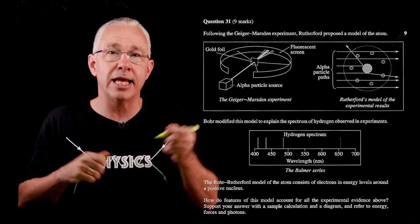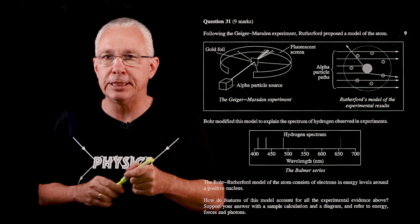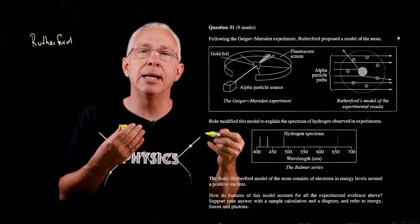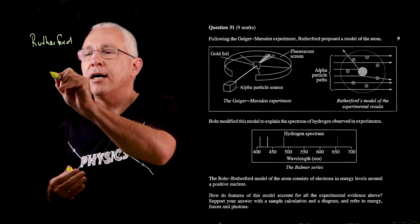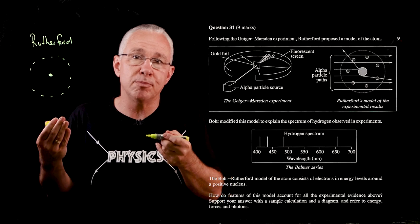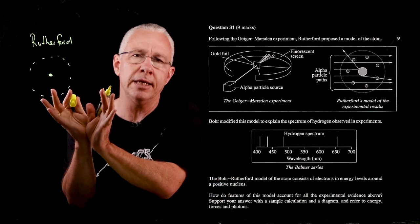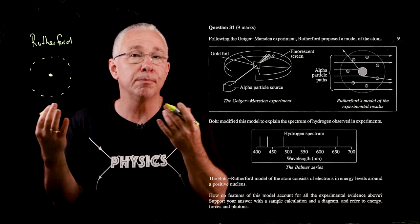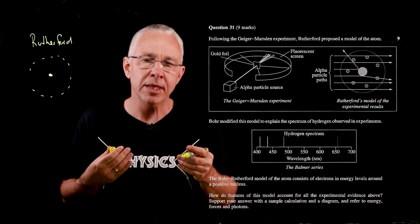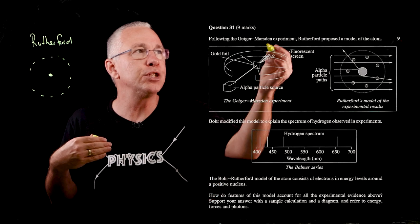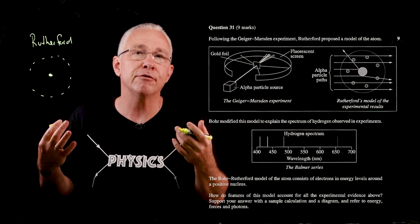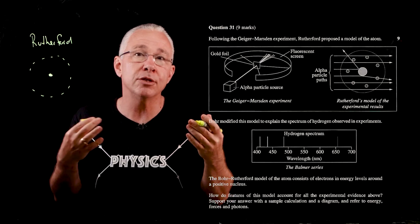First, identify the model being represented. When looking at Rutherford, you need to mention the planetary model — a single nucleus with electrons in orbit. You also need to state that the prior model was JJ Thomson's plum pudding model: a diffuse sphere of positive charge with electrons embedded in it. The Geiger-Marsden experiment fired alpha particles at gold foil, and what was discovered is that the vast majority passed straight through.